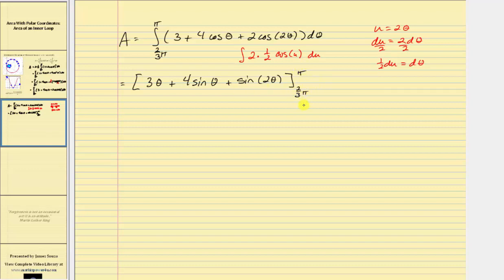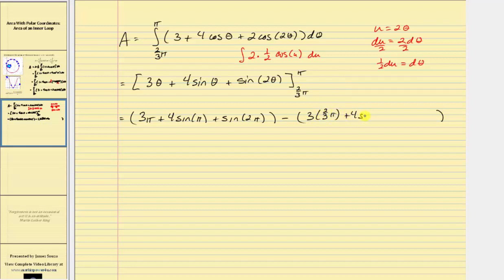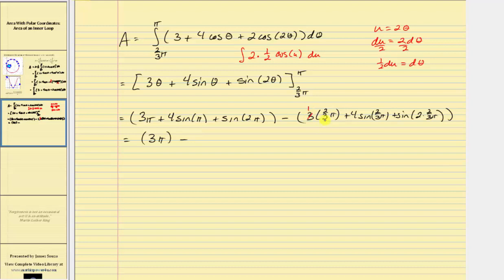And now we need to find F(b) minus F(a). When theta equals pi, we have three pi plus four sine pi plus sine two pi. And when theta equals two thirds pi, we have three times two thirds pi plus four sine two thirds pi plus sine of two times two thirds pi. Sine pi and sine two pi are both equal to zero, so here we just have three pi. Minus the quantity three times two thirds pi — the threes simplify, leaving us with two pi. And then we have plus four sine two thirds pi.